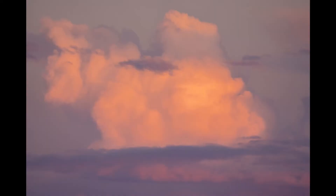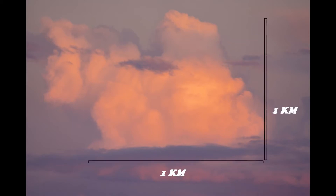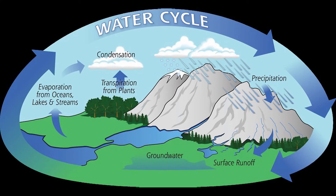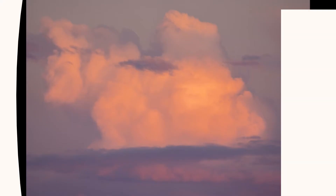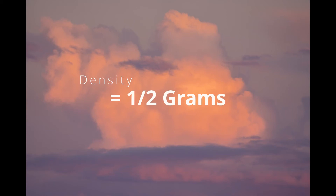A point to note is that cumulus clouds are roughly like a cube, so we can assume the same length for height as well. Now we have the height and length. The next step is to get density. As seen in how clouds are formed, they are made up of water droplets and ice crystals. In this study, scientists figured out a density of up to 0.5 grams of water per cubic meter.